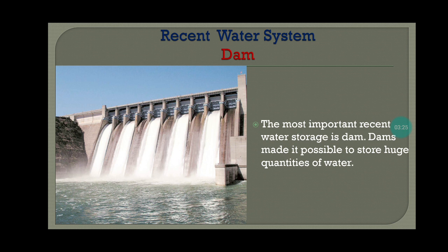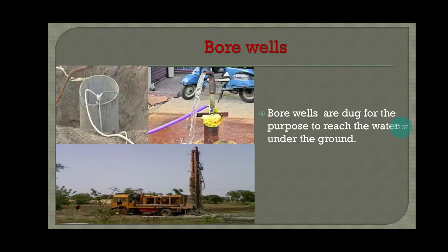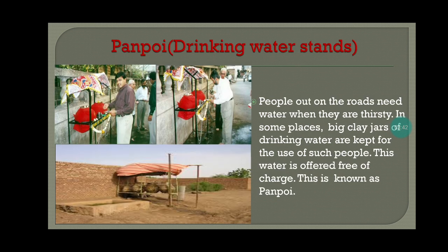Now let's move to the recent water system. The most important recent water storage is dams. Dams made it possible to store huge quantities of water. Borewells are dug for the purpose of reaching water under the ground. Panpoi, that is drinking water stands: people out on the roads need water when they are thirsty. In some places, big clay jars of drinking water are kept for such people. This water is offered free of charge, and this is known as panpoi.